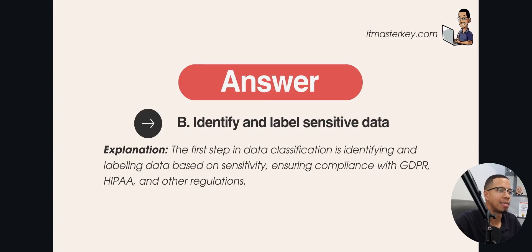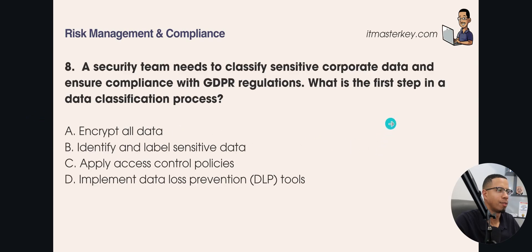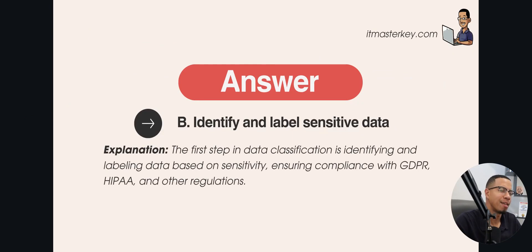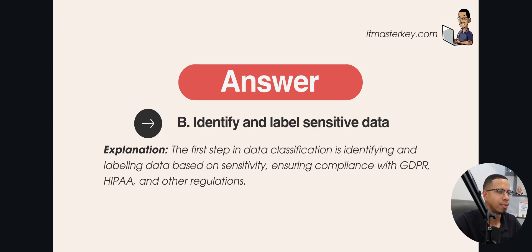The answer is identify and label sensitive data. The first step in data classification is identifying and labeling data based on sensitivity, ensuring compliance with GDPR, HIPAA, and other regulations. You want to make sure that you classify things correctly so the wrong people don't have access to information — with HIPAA and GDPR especially, you can get into serious legal issues. Make sure you identify and label things correctly so they don't get declassified, thrown away, or accessed by the wrong people.